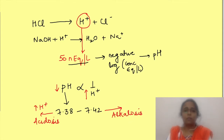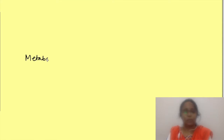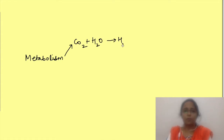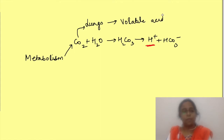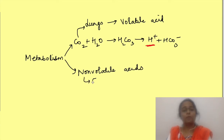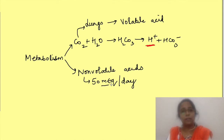On a day-to-day basis, a lot of acids are being added to our body fluids. Due to metabolism, carbon dioxide is produced. This CO2, after its reaction with water, produces H2CO3, which then dissociates into hydrogen ions and bicarbonate. Since carbon dioxide can be excreted by the respiratory system as a gas, it is known as a volatile acid. There is also direct addition of other acids, like lactic acid, which are known as non-volatile acids. In total, approximately 50 milliequivalents of acids are added into our body fluids per day.